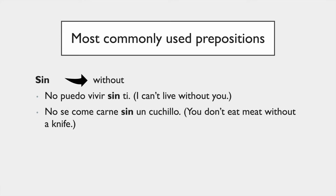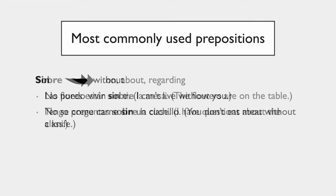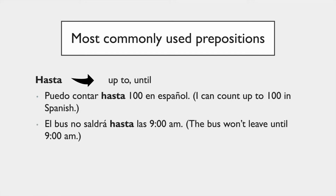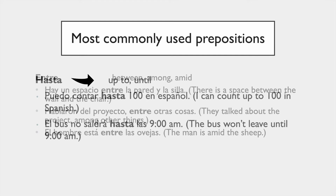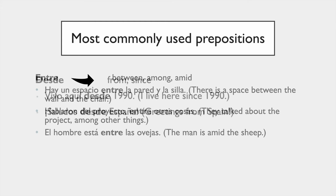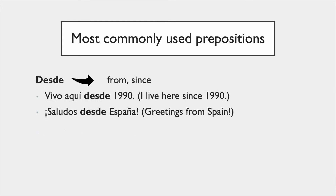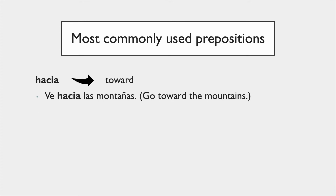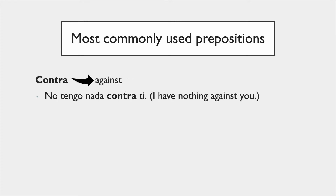'Sin' means 'without'. 'Sobre' means 'on', 'about', or 'regarding' — so there are different meanings here. 'Hasta' means 'up to' or 'until'. 'Entre' means 'between', 'among', or 'amid' — look at the examples. 'Desde' means 'from' or 'since'. 'Hacia' means 'towards'.